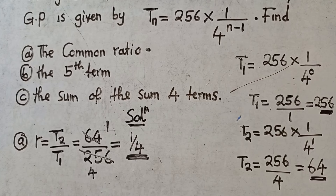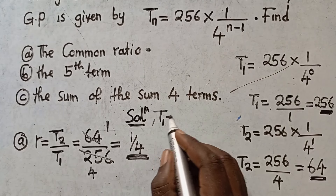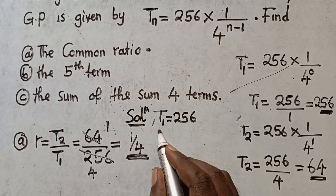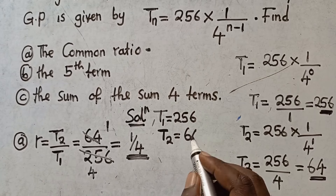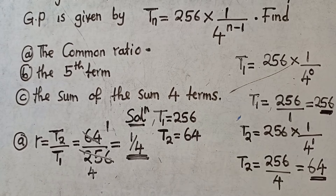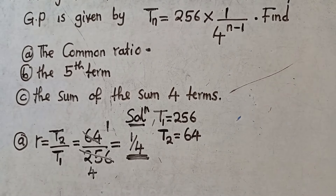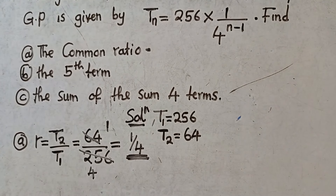Moving to the next question. We know our first term is 256 and our second term is 64 — we should keep this data. We now move to the second question, where we are told to find the fifth term.